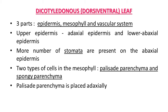First, we will discuss the dicotyledon or dorsiventral leaf and its internal structure. When we cut a TS (transverse section) of a dicot leaf, we can clearly observe its internal organization. It possesses three parts internally: epidermis is the outermost region, mesophyll is the middle one, and the vascular system is located inside. The upper epidermis is the adaxial epidermis and the lower is the abaxial epidermis.